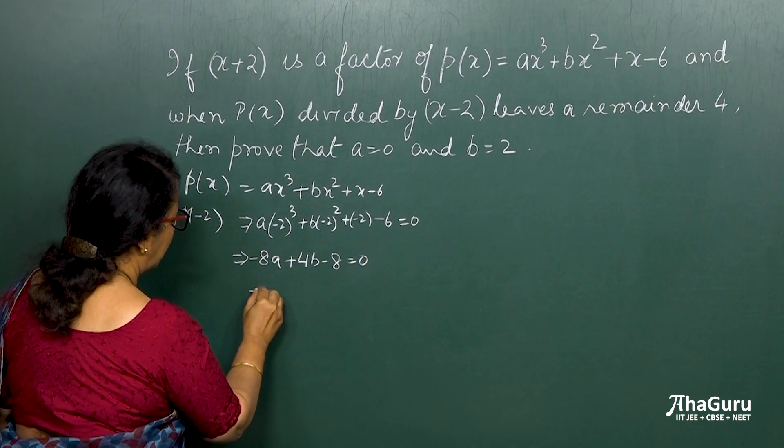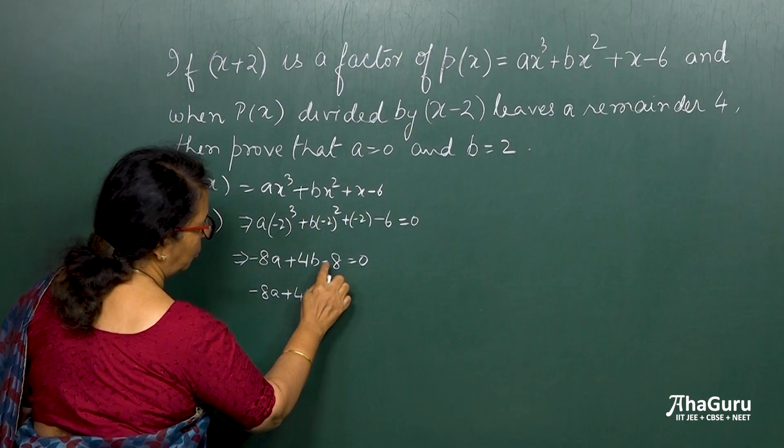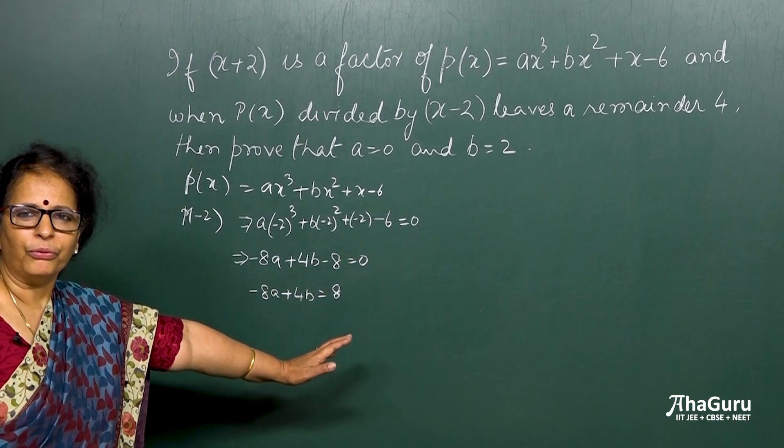So that gives me minus 8a plus 4b is equal to, I take it to the other side, make it 8. Now everything is a multiple of 4. So I can reduce this equation.